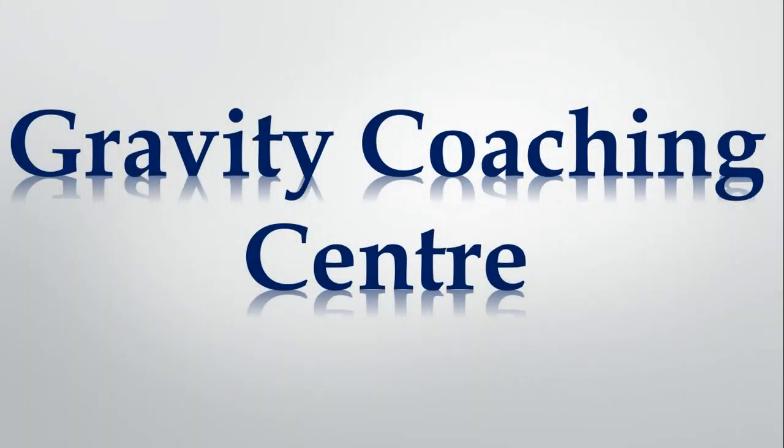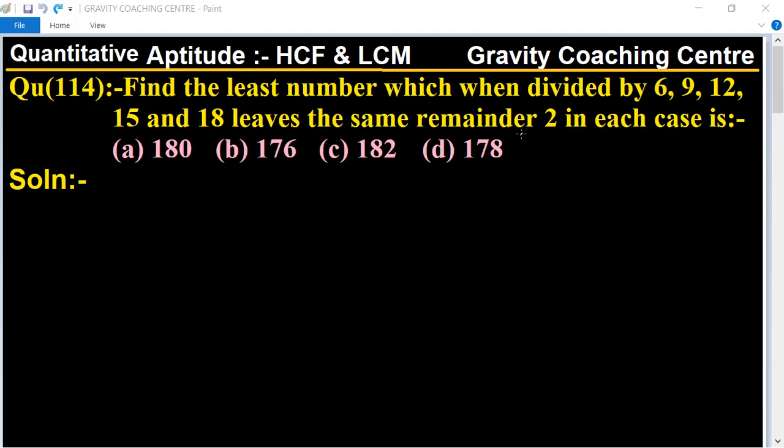Welcome to our channel Gravity Coaching Centre. Quantitative Aptitude, chapter HCF and LCM, question number 114: Find the least number which when divided by 6, 9, 12, 15 and 18 leaves the same remainder 2 in each case.